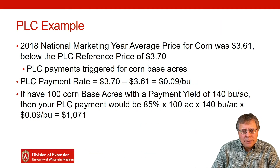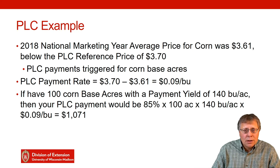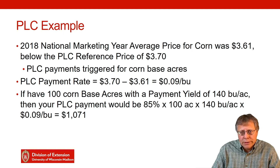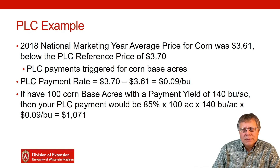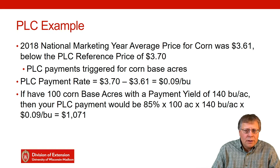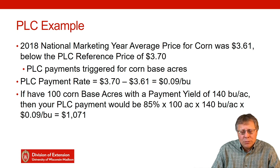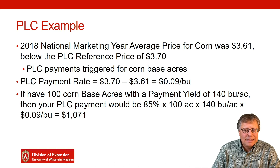Here's a simple example to illustrate how PLC works. The 2018 national marketing year average price for corn was $3.61, which is below the PLC reference price of $3.70, so that triggers PLC payments for anyone with corn PLC base acres enrolled. The payment rate is $3.70 minus $3.61, which is $0.09 per bushel. If you have 100 base acres of corn enrolled in PLC and a payment yield of 140 bushels per acre, your PLC payment would be 85% × 100 acres × 140 bushels per acre × $0.09 per bushel, which equals $1,071.